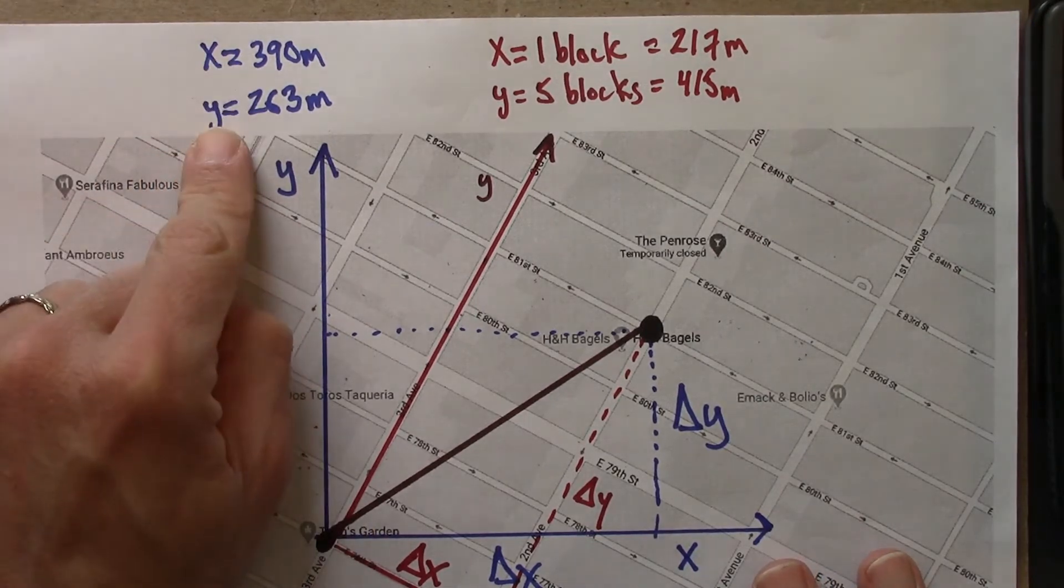These x and y values will be different for different coordinate systems, choices of axes. But the distance between two points is the same in any coordinate system, for any choice of axes.